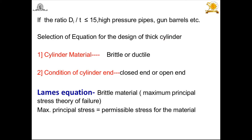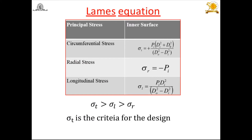Another condition is whether the cylinder end is open or closed. Based on that, we use different equations to find the thickness. The first equation is Lame's equation, which is used when the cylinder is made of brittle material. For brittle material, the maximum principal stress theory is applied.